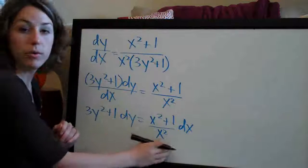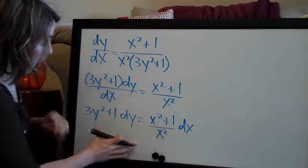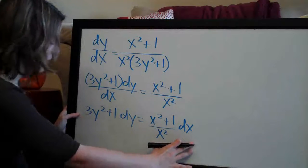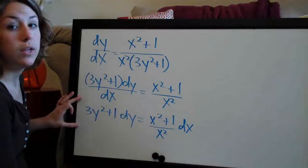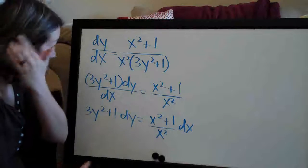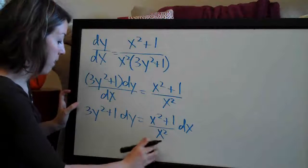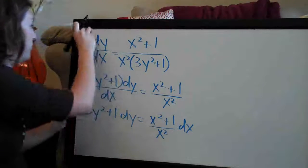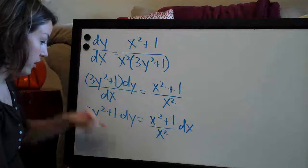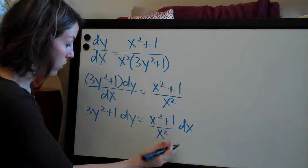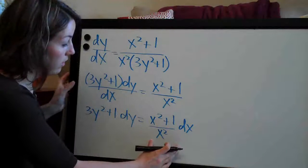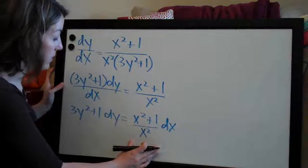Now that we've separated the variables — all the y's on one side and all the x's on the other — we need to take the integral of both sides separately. First, I'm going to do some work on the x side to get it into a form where we can more easily take the integral.